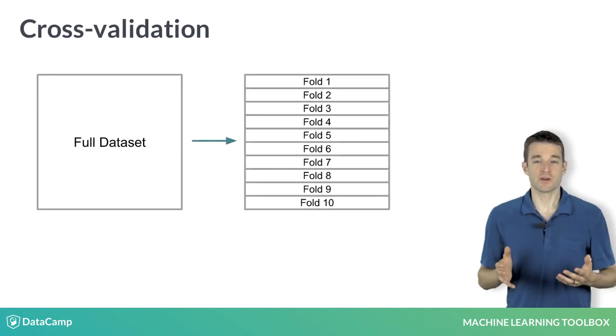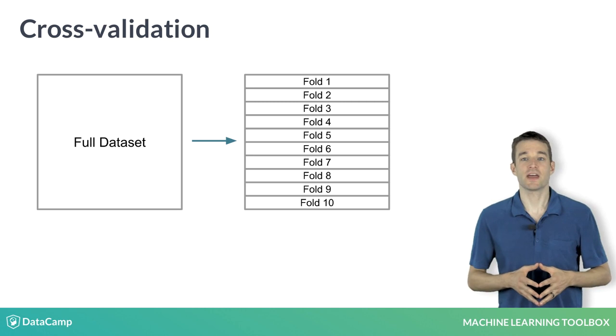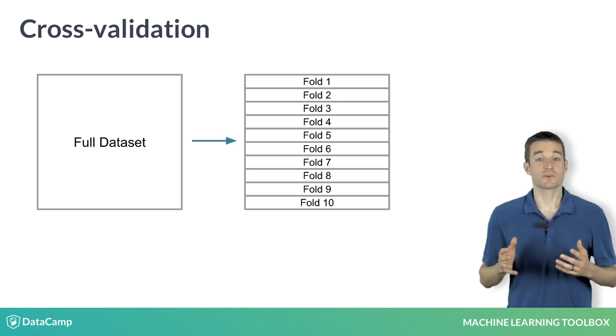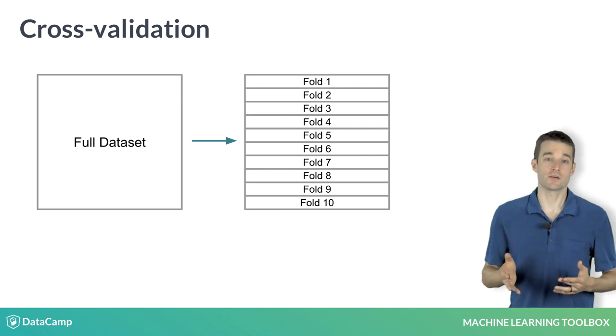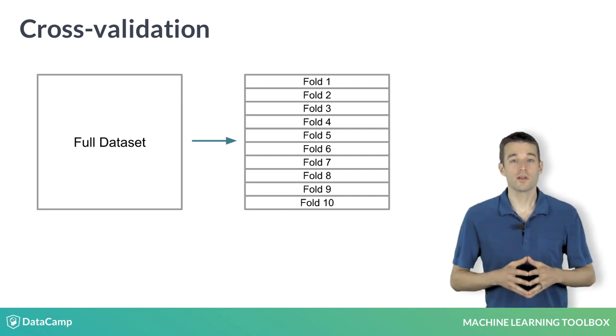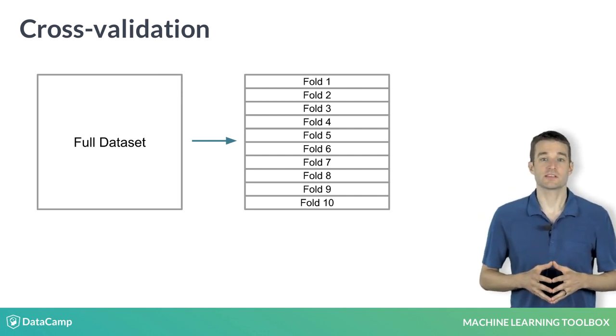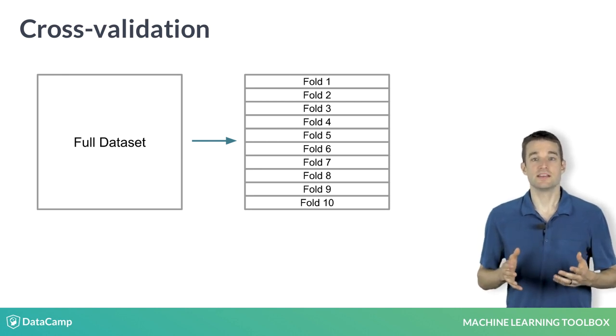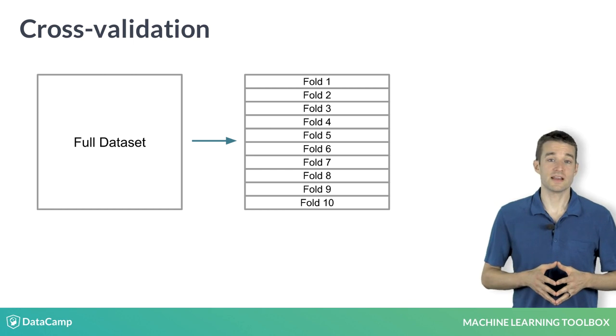A better approach than a simple train test split is using multiple test sets and averaging out-of-sample error, which gives us a more precise estimate of the true out-of-sample error. One of the most common approaches for multiple test sets is known as cross-validation, in which we split our data into 10 folds, or train test splits.